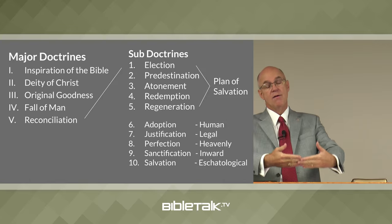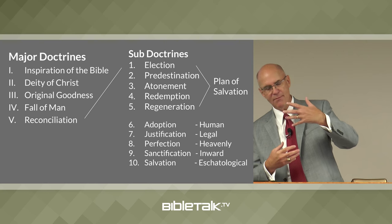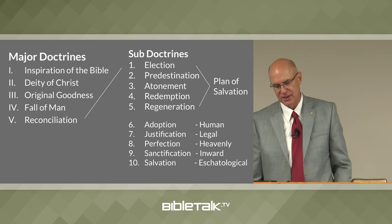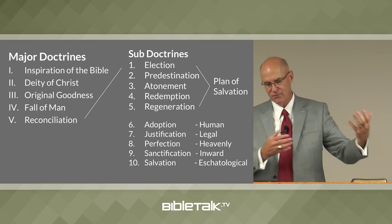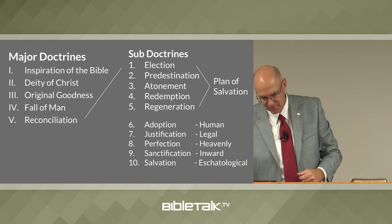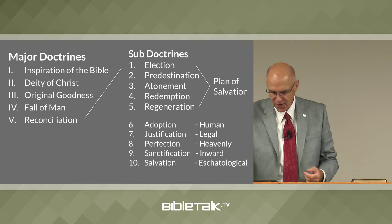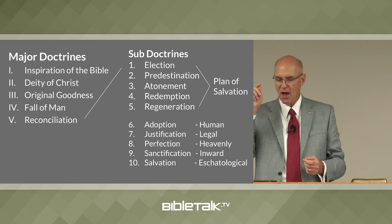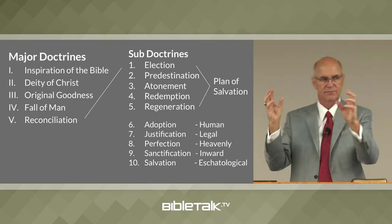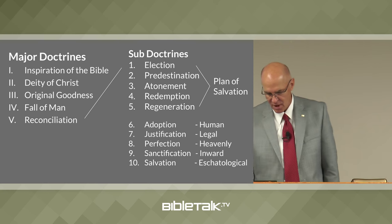There are another five sub-doctrines under reconciliation. The next five sub-doctrines describe the plan of salvation from different perspectives. Adoption explains God's plan of salvation from a human perspective. The doctrine of justification explains it from a legal perspective. The doctrine of perfection describes the plan of salvation from a heavenly perspective. Sanctification from an inward perspective. Salvation from an eschatological perspective. These five sub-doctrines — six, seven, eight, nine, ten — are talking about the first five, but they just look at it from a different perspective.